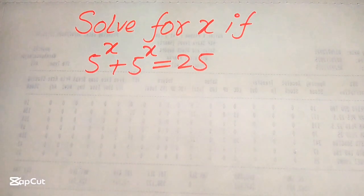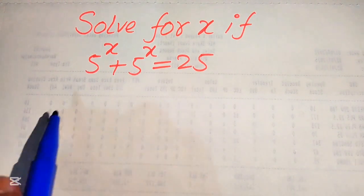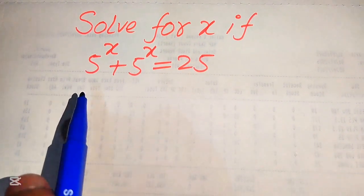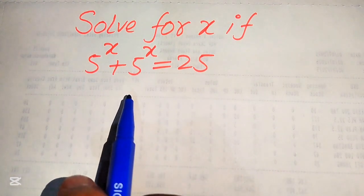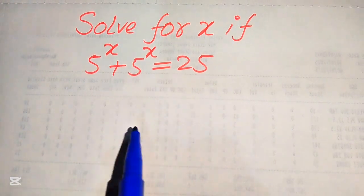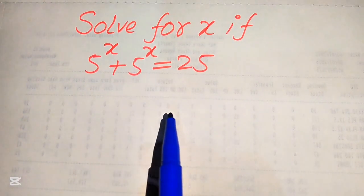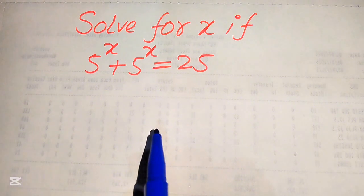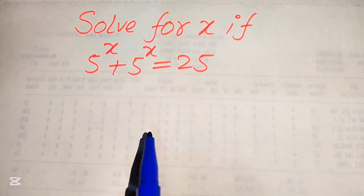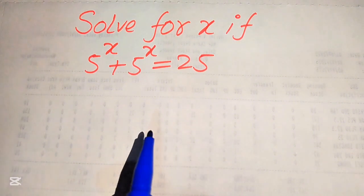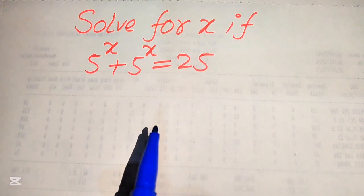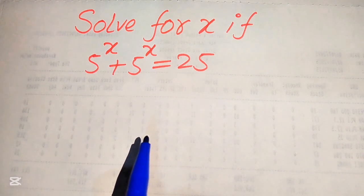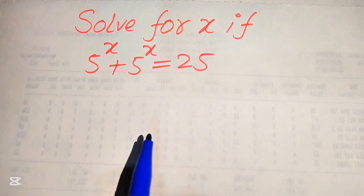Hello everyone, welcome to solve this nice math or algebra problem. Here we have 5 to the power of x plus 5 to the power of x is equal to 25, and we solve this problem for the values of x. I hope you like this method, but if you have any other method in mind, please don't hesitate to write it into the comment section.